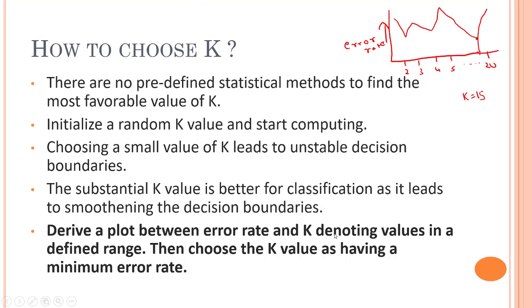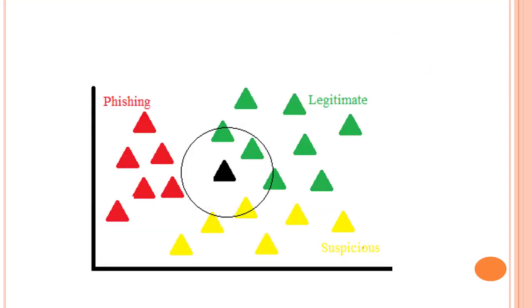What I will do is choose the value of K and then train my model. That's the approach I follow when using KNN algorithm. I will plot a graph between error rate and K denoting values in a defined range, then choose the K value as having the minimum error rate.